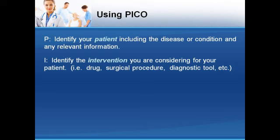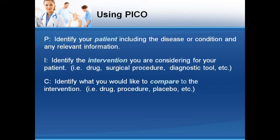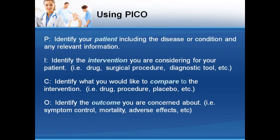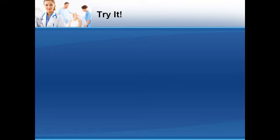Is the intervention a drug, a surgical procedure, a diagnostic test? Then describe the main alternative being considered for comparison — is it a different drug or procedure, no treatment, a placebo? Next, identify the outcome you are concerned about: is it symptom control, reduced mortality, accurate and timely diagnosis? Finally, consider what type of clinical question you have. This becomes important when you must determine which resources to use for your literature search.